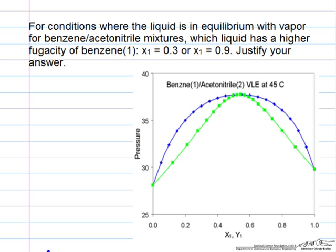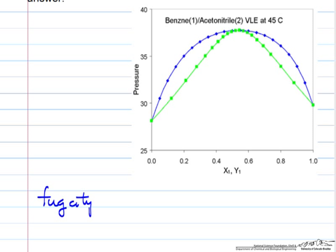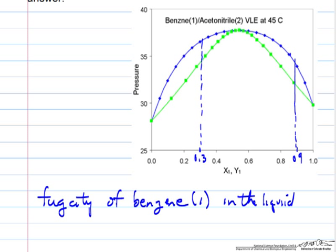So what's of interest is fugacity, in this case, of benzene, which is component one, in the liquid. And it's asking us to do that at two conditions. So what I've indicated is 0.3 and 0.9 liquid mole fraction.